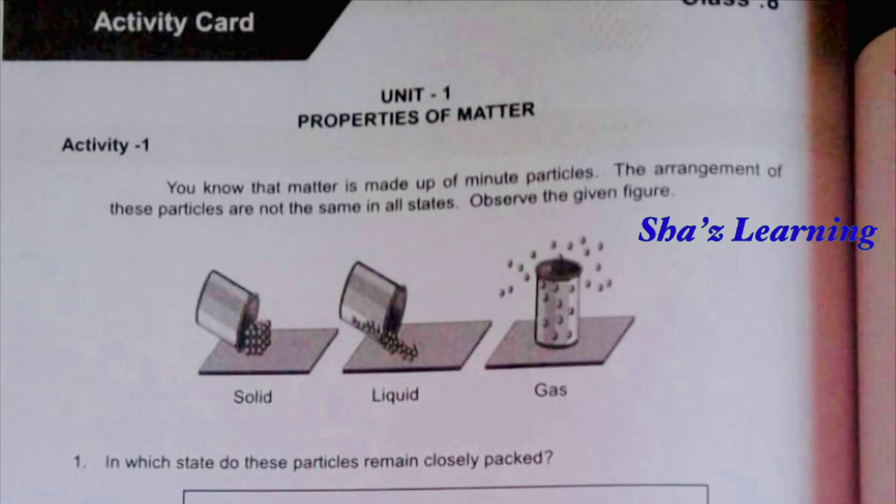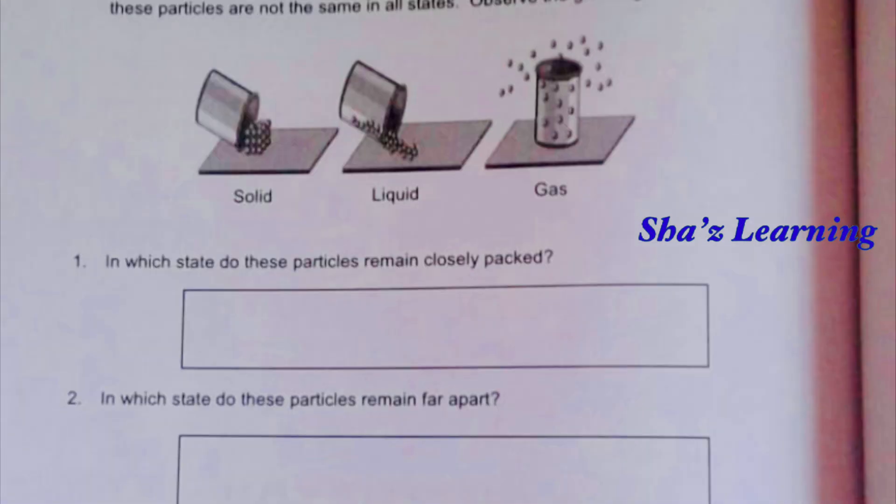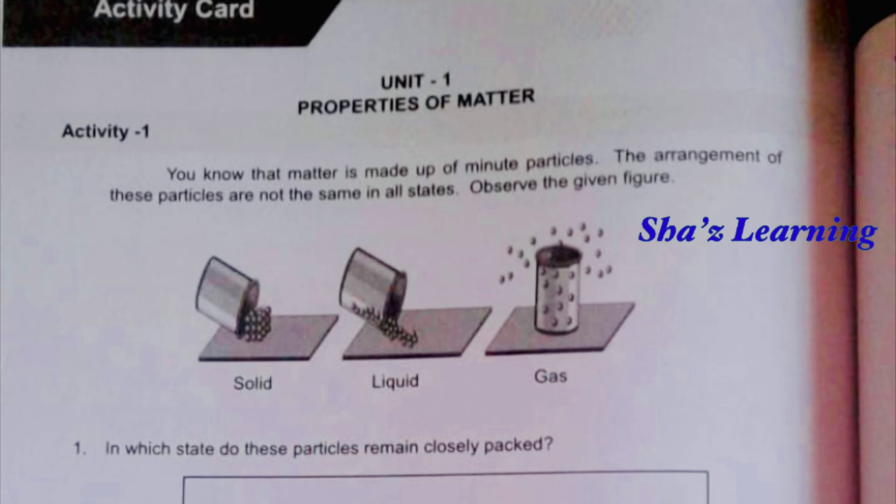Activity card, learning excellence record portions. Properties of Matter, Unit 2.1. This is a little bit of activities — if you look at the speed, you see a lot of things.